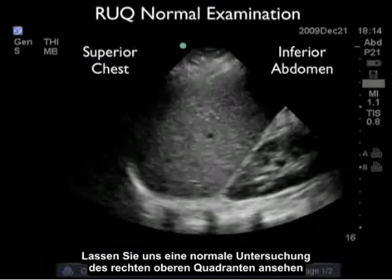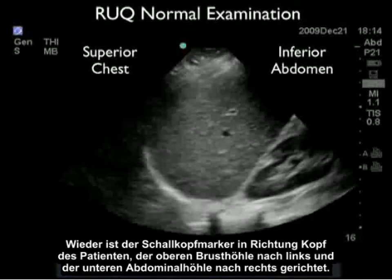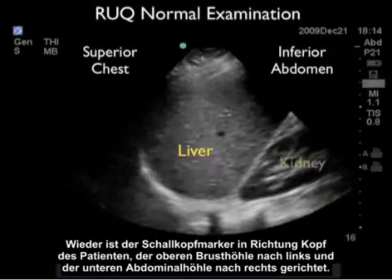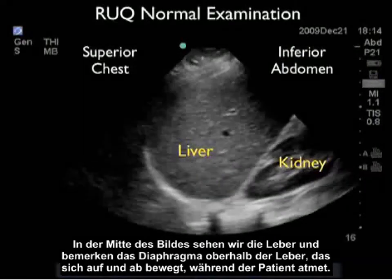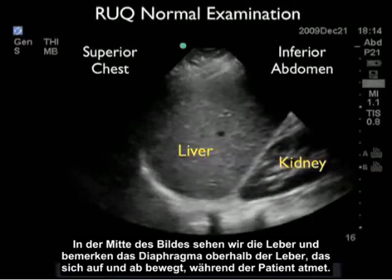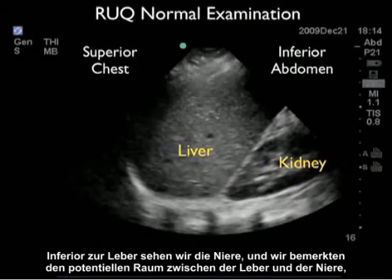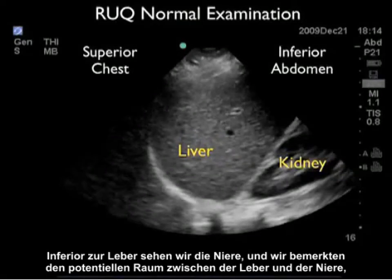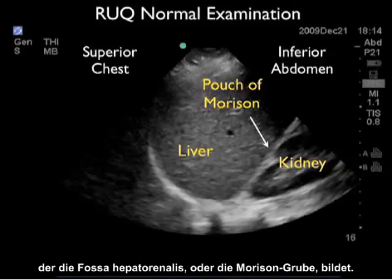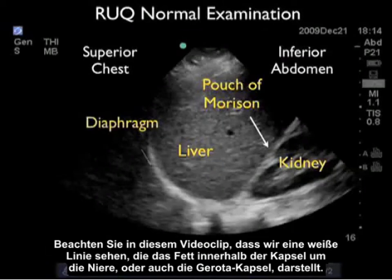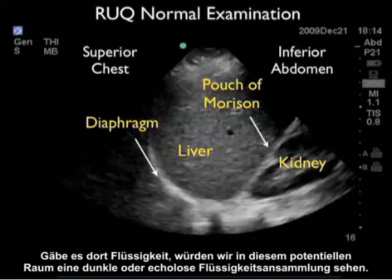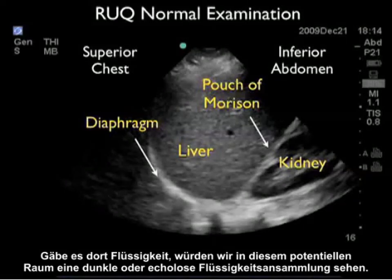Let's take a look at another normal right upper quadrant examination. Again, the probe marker is towards the patient's head, so superior chest cavity towards the left and inferior abdominal cavity towards the right. We see the liver in the middle of the image, and notice the diaphragm above the liver moving up and down as the patient breathes. We see the kidney inferior to the liver, and notice the potential space in between that makes up the hepatorenal fossa or pouch of Morrison. All we see is a white line representing the fat within the capsule around the kidney, or Gerota's capsule. If there was fluid, we would see a dark or anechoic fluid collection in this potential space.